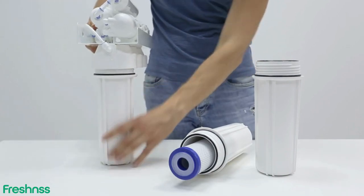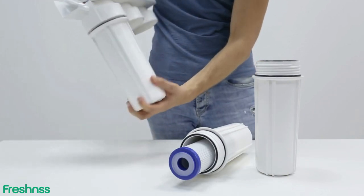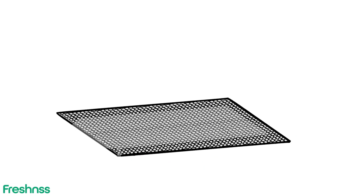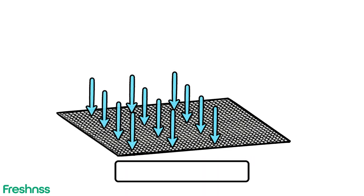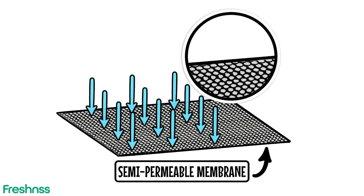One of the most effective home water treatment solutions is reverse osmosis. Reverse osmosis works by forcing water at high pressure through a semi-permeable membrane with pores that are only 0.0001 micron in size.